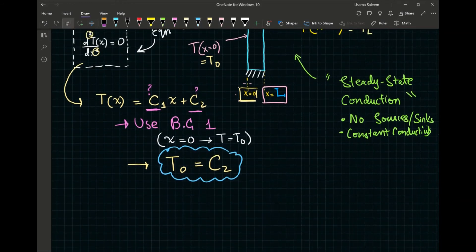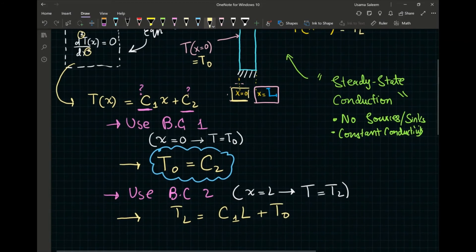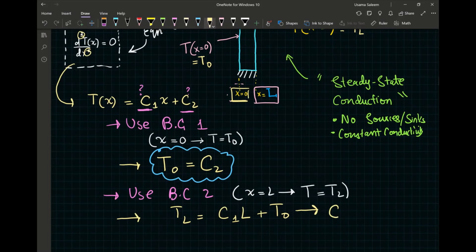Now, my next boundary condition, use BC 2. And once again, my BC 2 is at x equals L. My temperature is equal to T sub L. And we're going to write this as T sub L equals C₁ times L plus T₀. And after simplification, C₁ turns out to be TL minus T₀ over L.